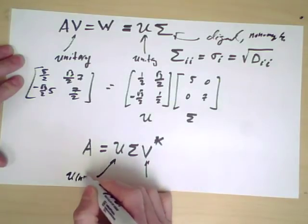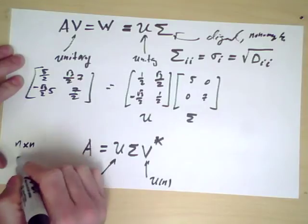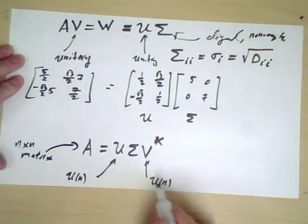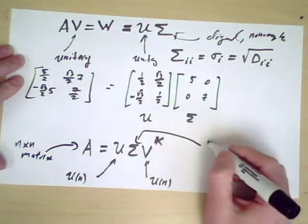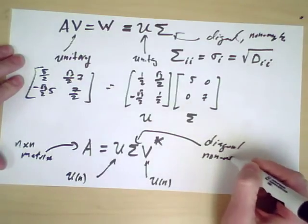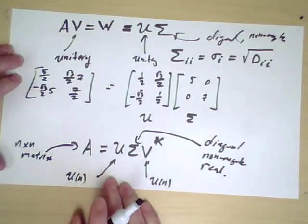So these are in Un. If A is an n by n matrix, Un, Un, and this is diagonal, non-negative, and real. It's a very strong condition.